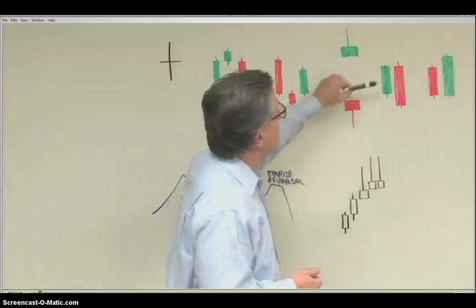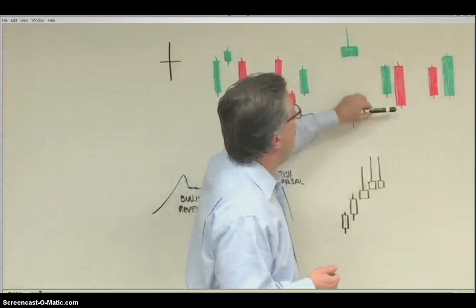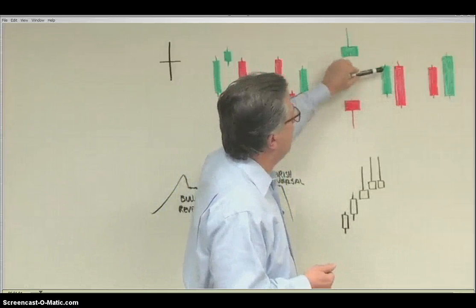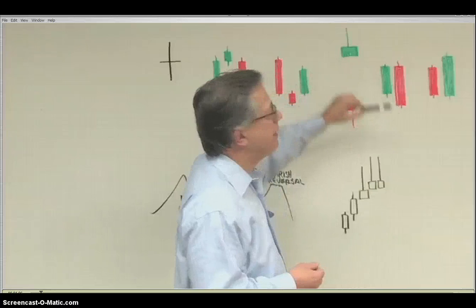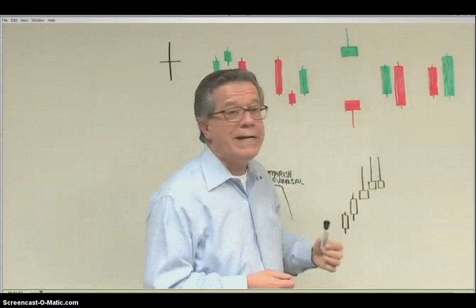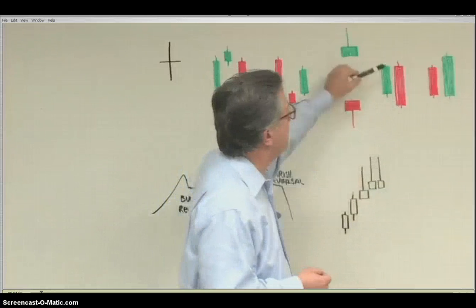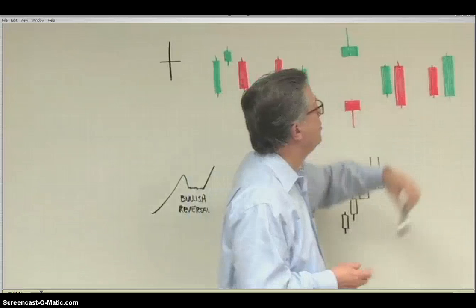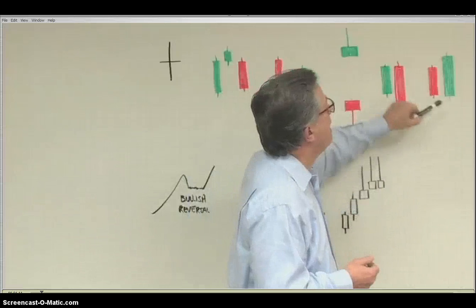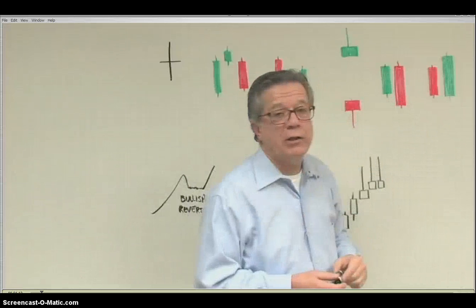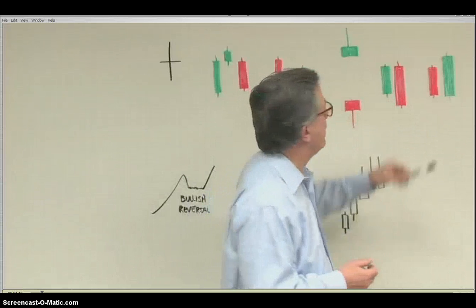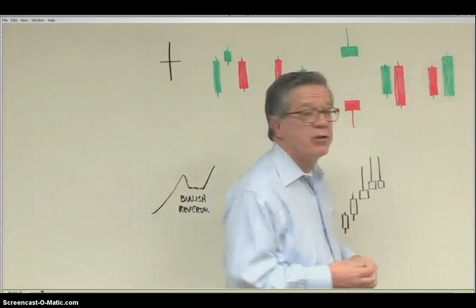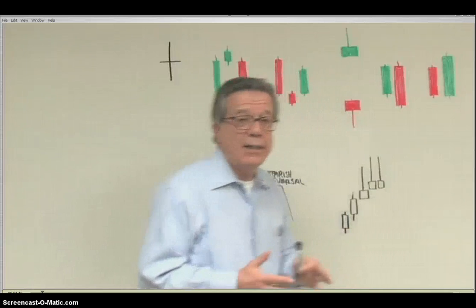This is a bearish engulfing candle — the red one — where the downside candle completely engulfs the green candle, indicating a potential move to the downside. And then we have a bullish engulfing candlestick pattern indicating a potential move to the upside.